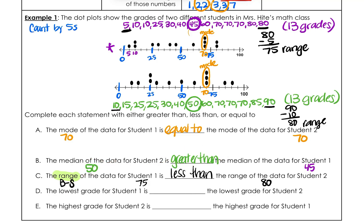The next question asks about the lowest grade, which is the minimum. For student one, the smallest grade was 5. For student two, the lowest grade was 10. So describing student one's lowest grade compared to student two's: 5 is less than 10.